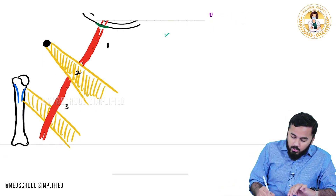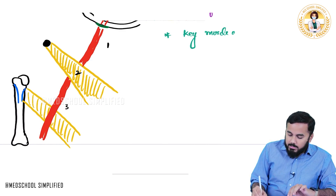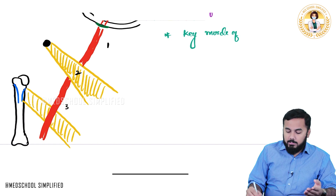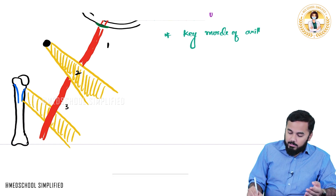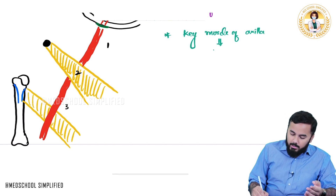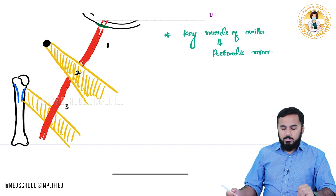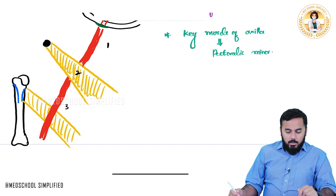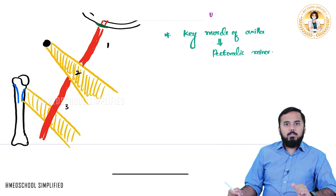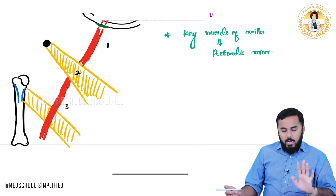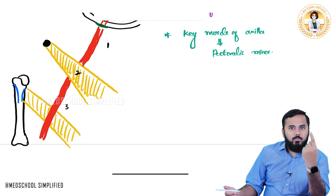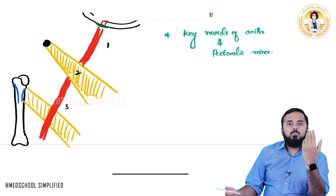Pectoralis minor is called the key muscle of the axilla because pectoralis minor is the one which divides the axillary artery into three parts — first, second, and third. Now, the important thing is: the first part gives one branch, the second part gives two branches, and the third part gives three branches.